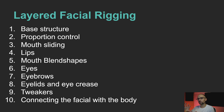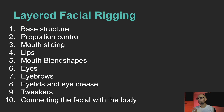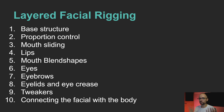For the layered facial rigging, I plan to structure it in 10 layers: basic structure, proportion controls, mouth sliding, lips, mouth plane shapes, eyes, eyebrows, eyelids, the crease under the eyebrows, tweakers for finer movement, and connecting everything to the body. I may do two versions of the eyebrows. One of the biggest advantages of this layered approach is you can swap out parts of the rig without breaking the rest.